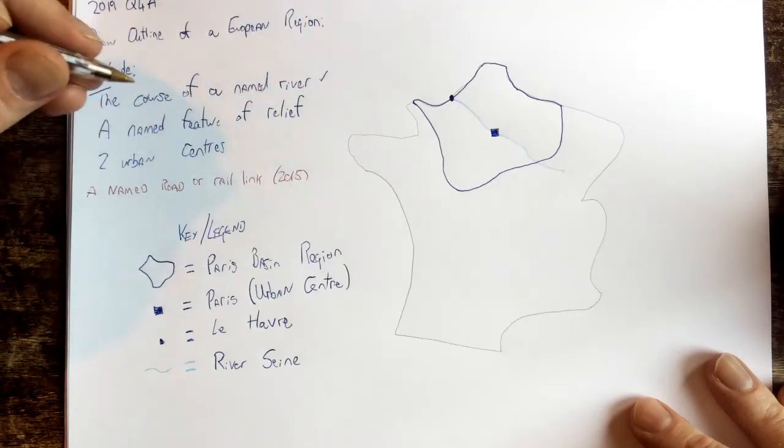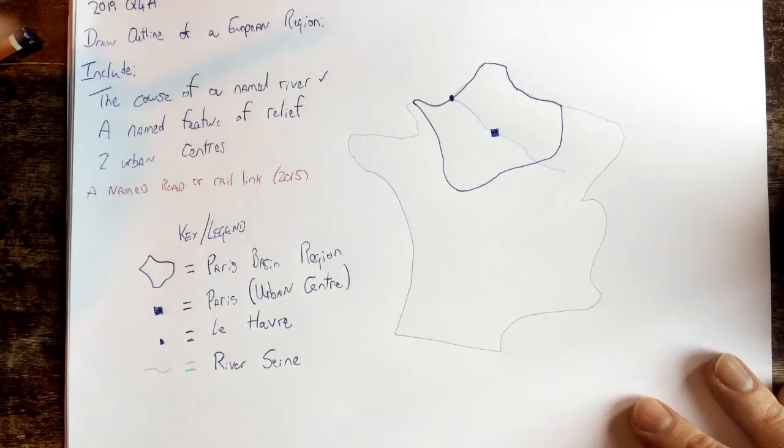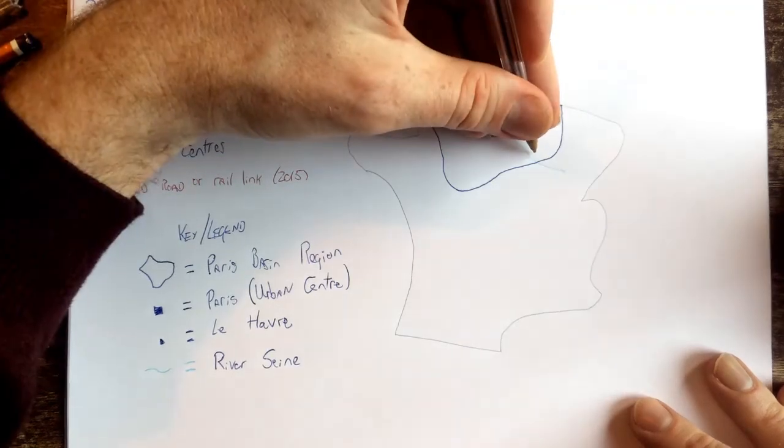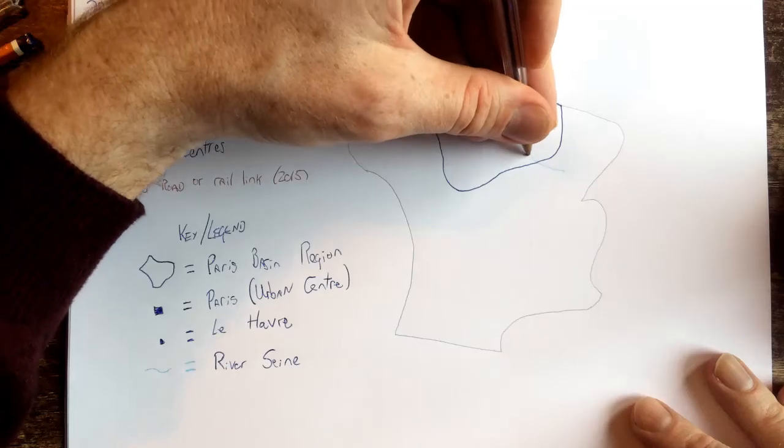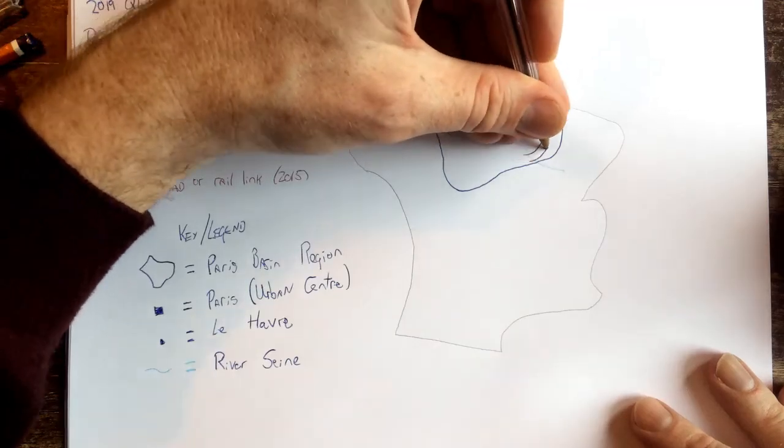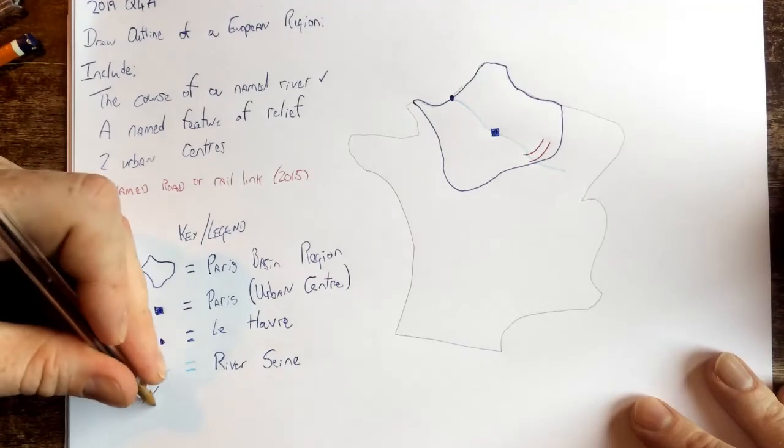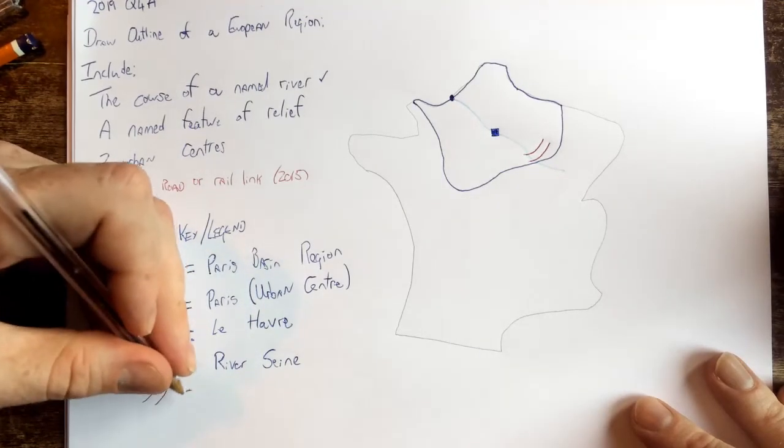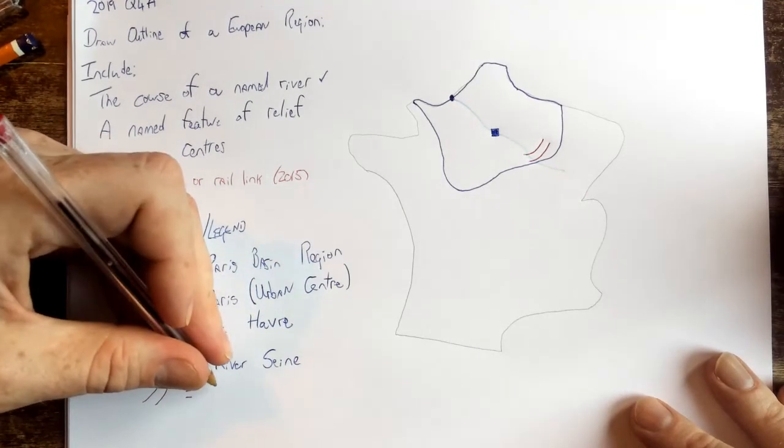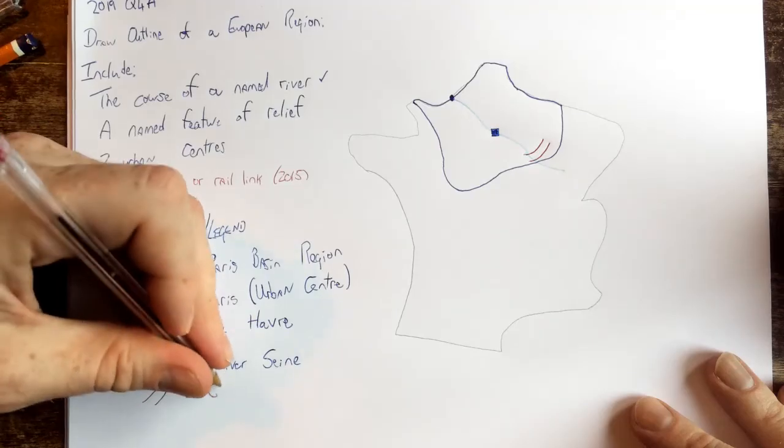And the named feature of relief: over to the edge of Paris, over in the Champagne region, we have these chalk escarpments. Okay, this upland relief, and these chalk escarpments is where we grow our champagne. So chalk escarpments.